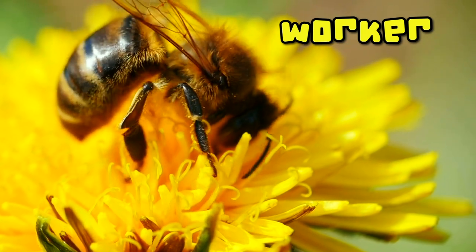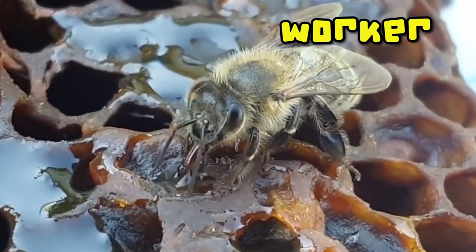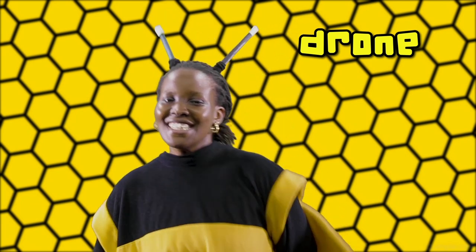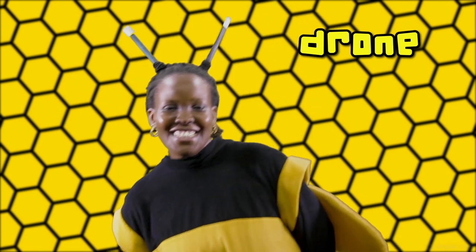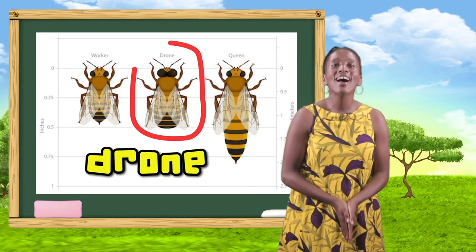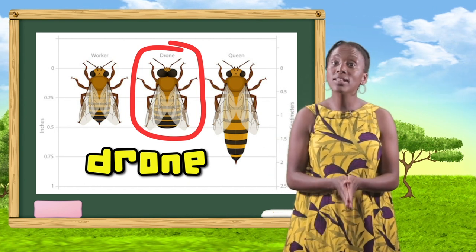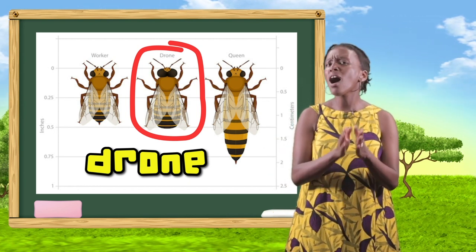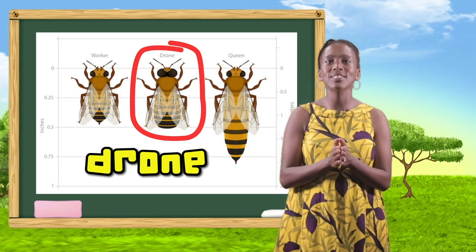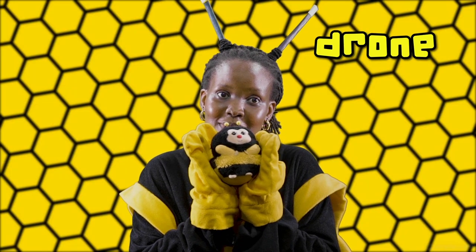Would you believe it? The worker bee even regurgitates its food to make honey. The drone bee is busy making bees, and they all live together in a hive. The drone bee is a male bee. There are only 100 to 500 drones in the hive out of thousands, and their role is to mate with a queen to extend the community.